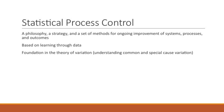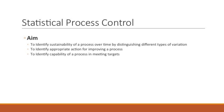SPC is a philosophy, a strategy, and a set of methods for ongoing improvements of systems, processes, and outcomes. It's based on learning through data, and the foundation is in the theory of variation, which is understanding common and special cause variation. The aim of SPC is to identify sustainability of a process over time by distinguishing the different types of variation, to identify appropriate action for improving a process, and to identify capability of a process in meeting targets.